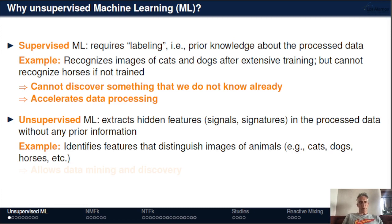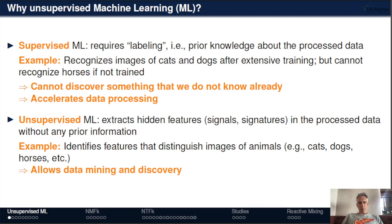For example, if we're analyzing images of animals, we can distinguish features that make cats, dogs, and horses different. We won't be able to label these images as cats, dogs, and horses, but we'll identify different types of animals as A, B, or C. After that, subject matter experts can label them appropriately. What's important is that it allows data mining and discovery, because we might not know what features unsupervised ML can identify in large datasets.